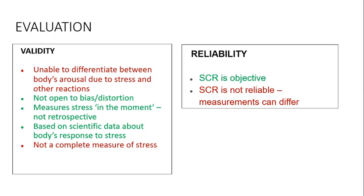In terms of reliability, the SCR is objective — it's not going to be interpreted differently by different people; we have a reading and that is the level, straightforwardly. However, it isn't very reliable, because research has shown that when measuring the same person on different occasions within the same day, or comparing one person to another, measurements can differ significantly. Even within the same day, readings for the same person at different times can be very different, suggesting it's not actually a consistent measuring tool — which is a really big problem.